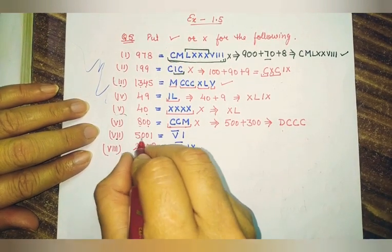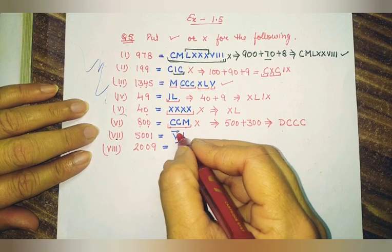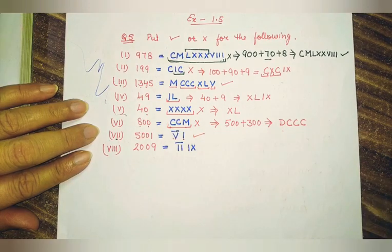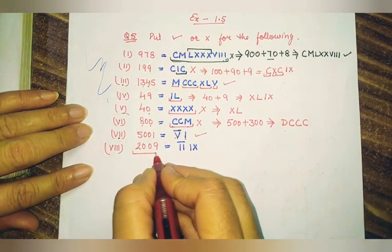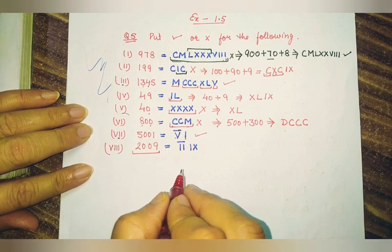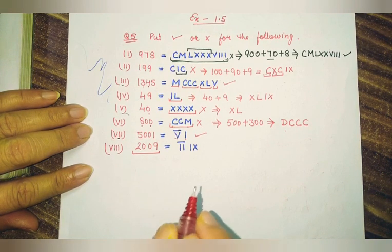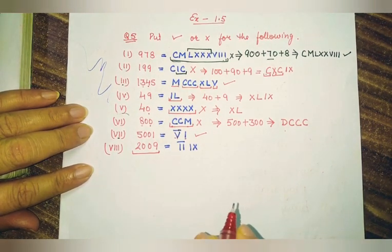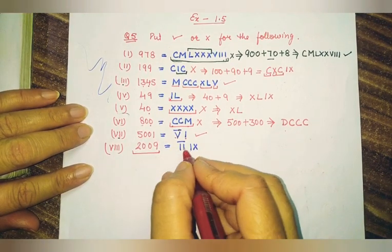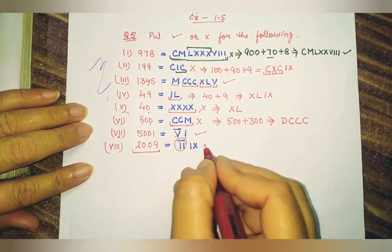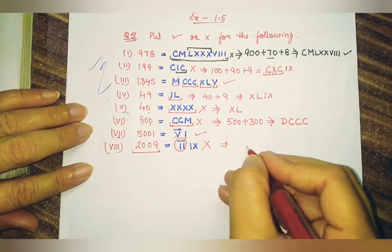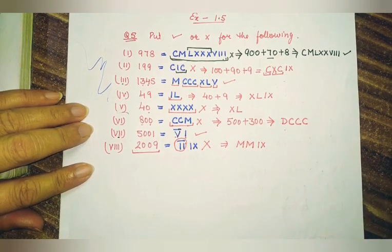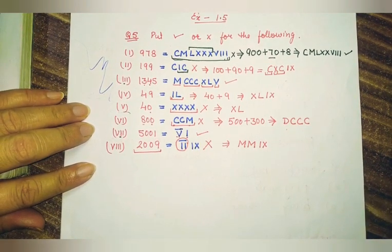Now the next number is 5001. That means 5000 plus 1 — write V with a bar for 5000, then add I for 1. That is written correctly. Then they have given 2009. But according to the rule, till 3000 we must use M — it is compulsory. However, here they have used a bar, so that is wrong. The correct way: 1000 plus 1000 gives MM for 2000, so 2009 is written as MMIX.